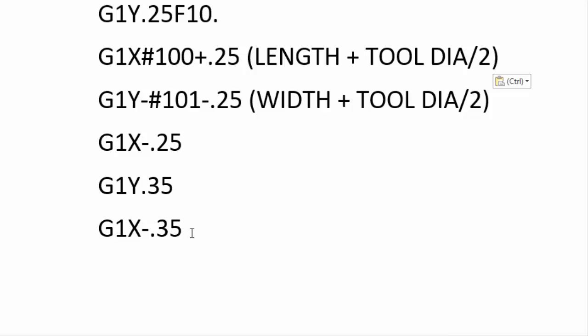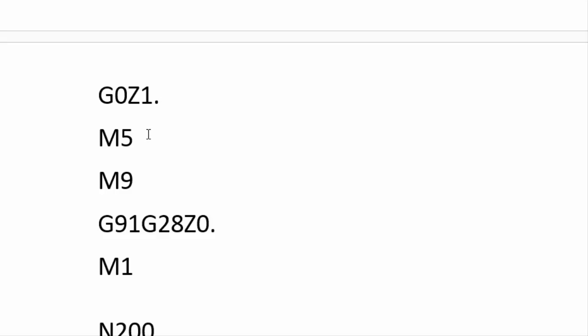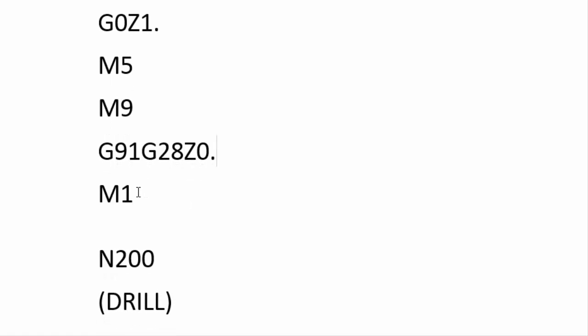Then G1 Y0.350 brings us 100 thousandths beyond the edge of the part back to the initial Y start point. We move away in X to X-0.350, then finish that operation with a rapid move to Z1 inch, turn off the spindle and coolant, rapid to Z home position, and an M1 optional stop.